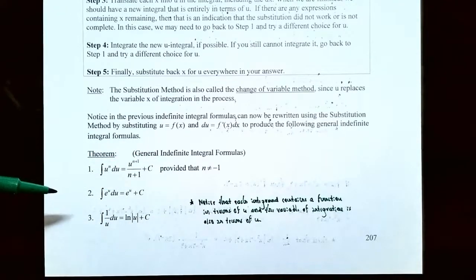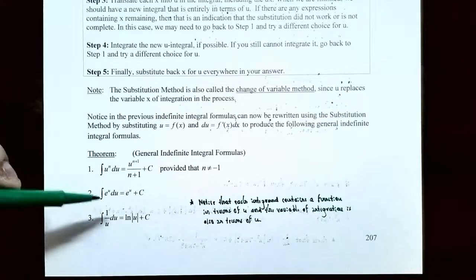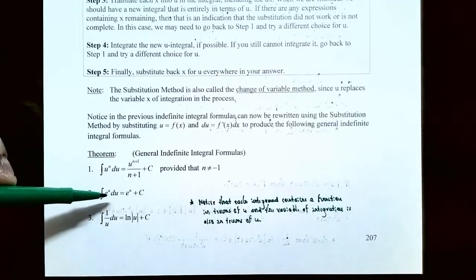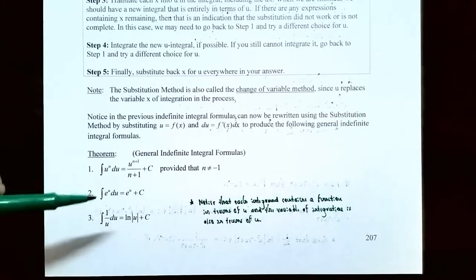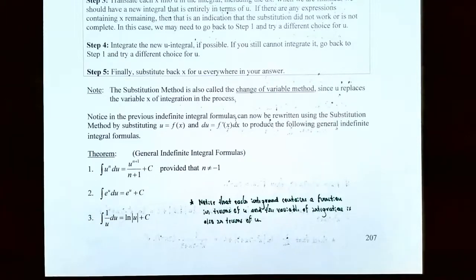Integration formula number two was e to the f of x power times f prime of x dx. Again, replacing f of x with u gives e to the u power, and the f prime of x dx in the integrand is replaced with du. So the integral of e to the u du — this looks very familiar: previously e to the x dx had a family of antiderivatives of e to the x plus c. Now the variable of integration is u, so the family of antiderivatives is e to the u plus c.